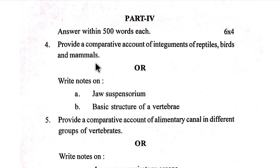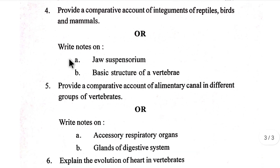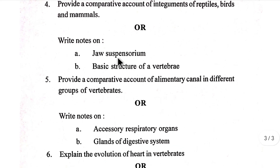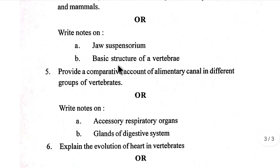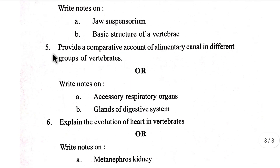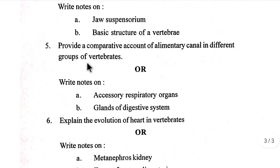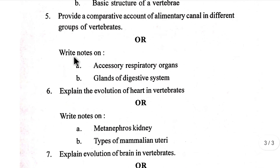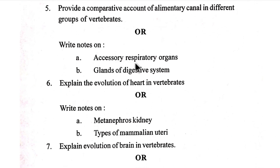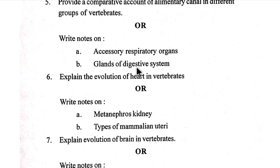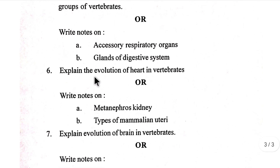Number four: provide a comparative account of integuments of reptiles, birds, and mammals. Write a note on jaw suspensorium. Basic structure of a vertebrate heart. Provide a comparative account of the alimentary canal in different groups of vertebrates. Write a note on accessory respiratory organs and glands of the digestive system.